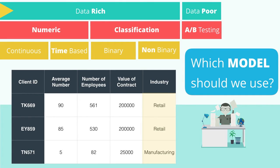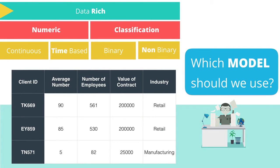Since we have the number of tickets for each client, we're data rich. Moving down the flow chart, next we need to determine if we should use a numeric model or classification model. Our target outcome that we're trying to predict is the number indicating the average number of tickets we can expect per client. Therefore, we should use a numeric model.